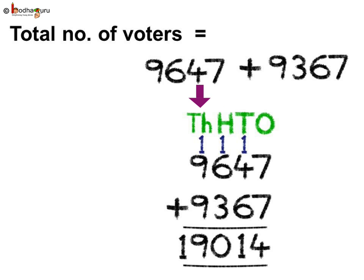Lastly, the thousands position: 9 plus 9 is 18, plus the 1 carried over is 19. So the answer is 19,014. Thus, the total number of voters are 19,014.